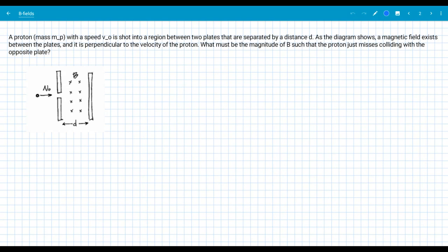We're given the mass, m sub p, and it has some speed v naught and it's shot into a region between two plates. So kind of like a parallel plate capacitor situation here. We're told that the plates are separated by distance d and that there's a uniform b field existing in the plates. And you can see from the diagram that the b field is everywhere into the page there. And we're also told that the b field is perpendicular to v naught.